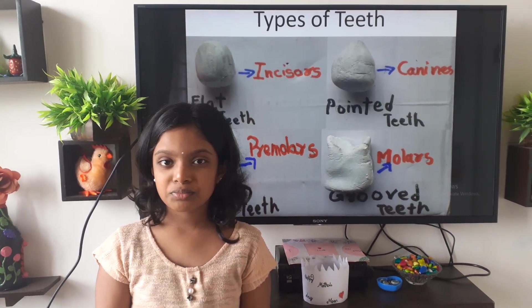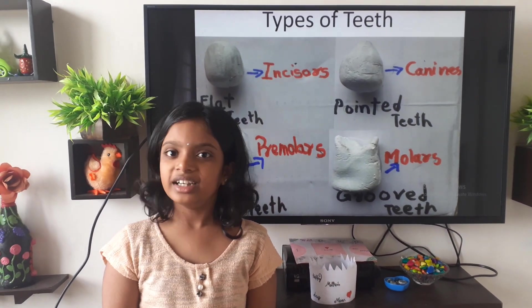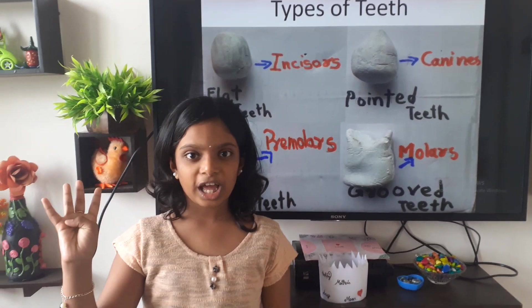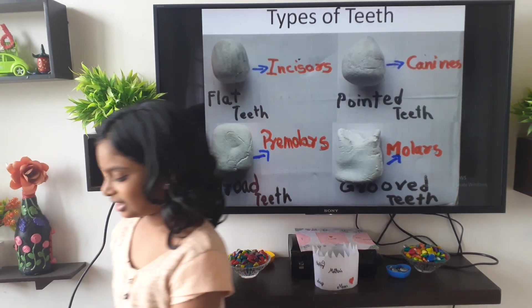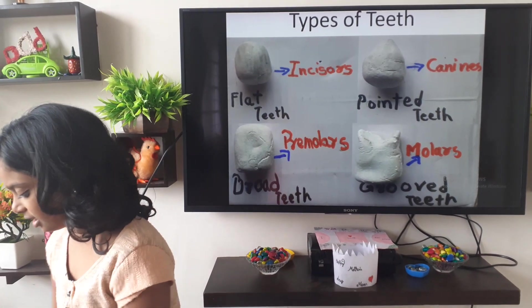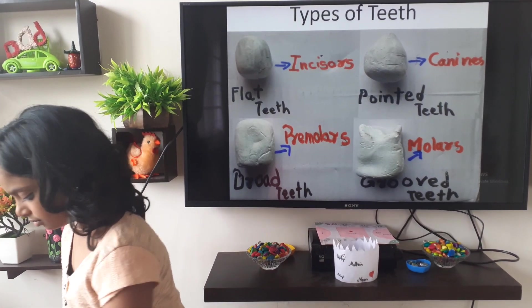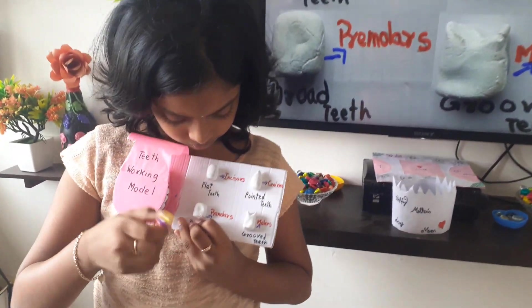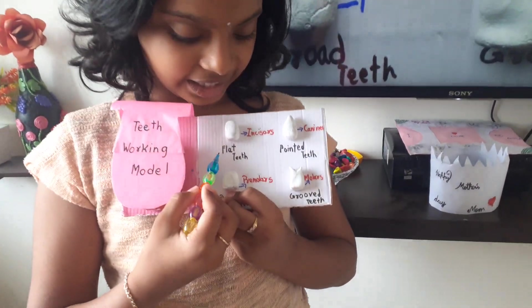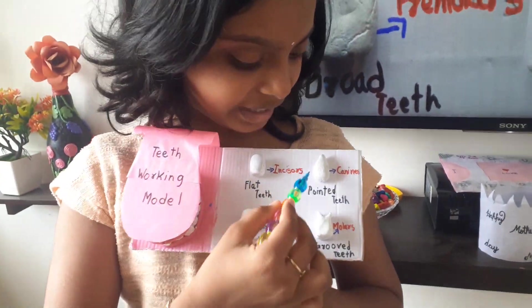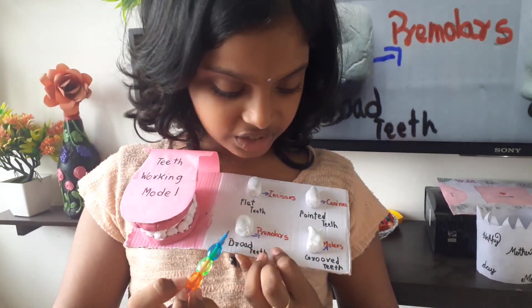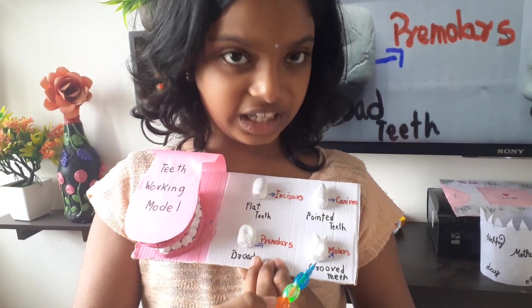Let us see the types of teeth. In our teeth, there are four types of teeth. Those are flat teeth, pointed teeth, broad teeth, and grovel teeth.